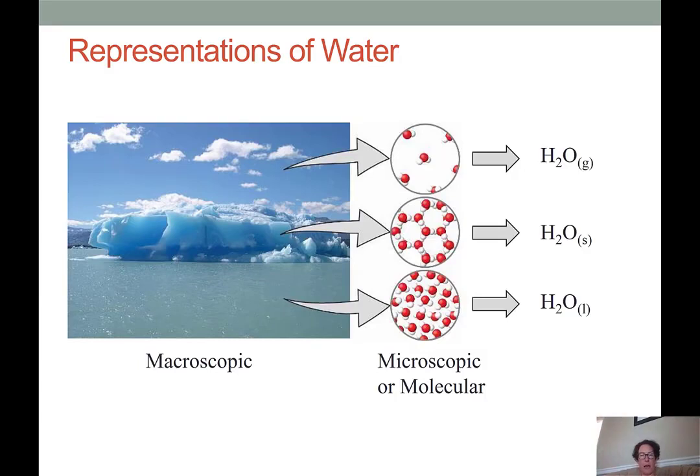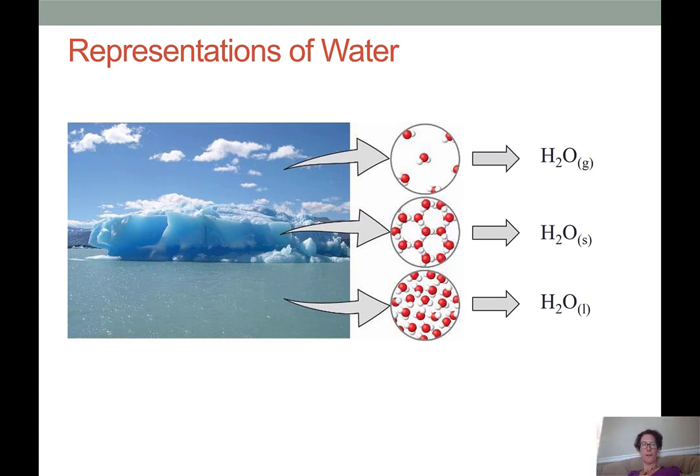Thirdly, we have the symbolic domain. This domain uses the specialized language that is used to represent components of the macroscopic and microscopic domains using chemical symbols. It's very useful in labeling the content of chemical compounds and in describing reactions. You'll see a lot more information about the symbolic form of representation when we get to our unit on chemical compounds. Therefore, this video is going to focus more on the molecular or microscopic domain.